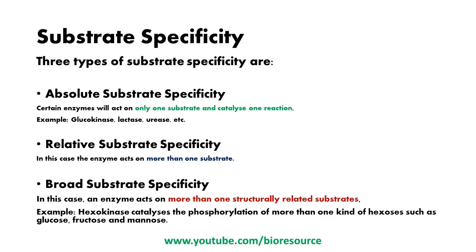Glucokinase acts on glucose to convert it into glucose-6-phosphate. Lactase acts on lactose, converting it into glucose and galactose. Urease acts on urea, converting it to ammonia and carbon dioxide.